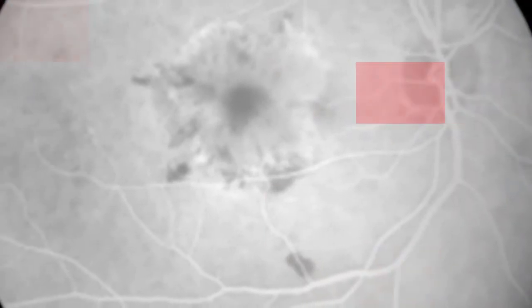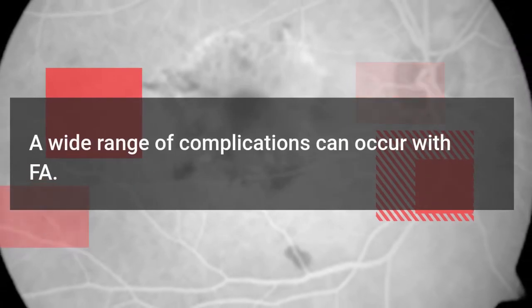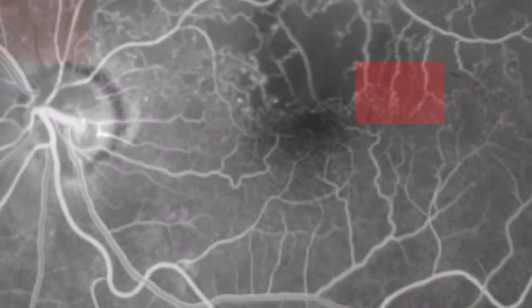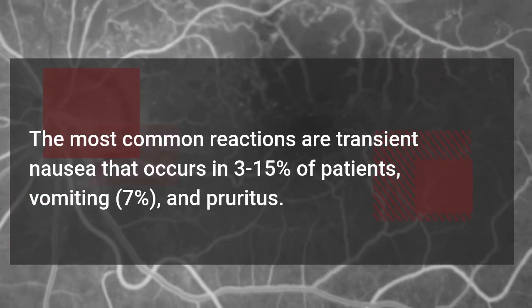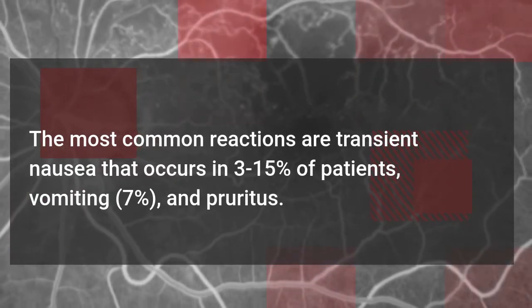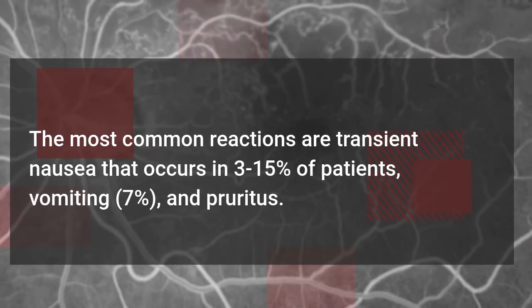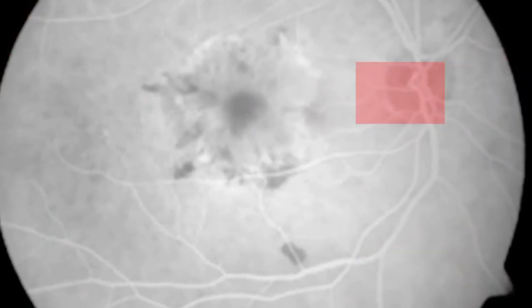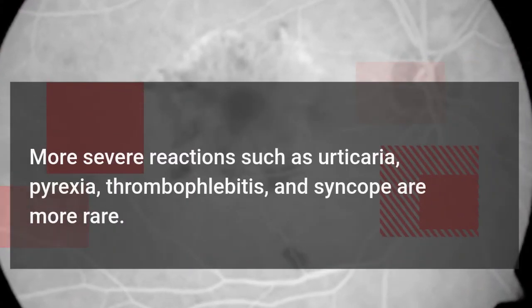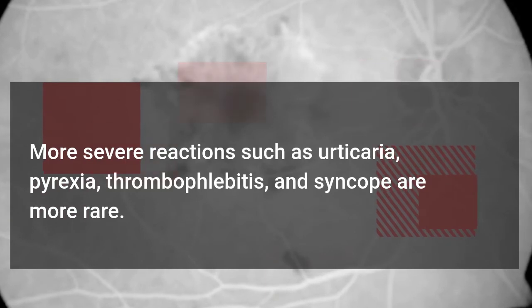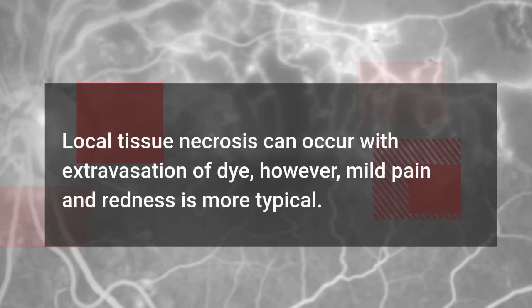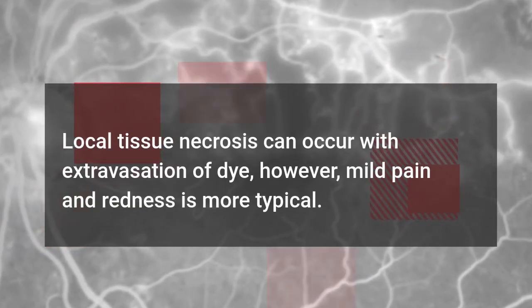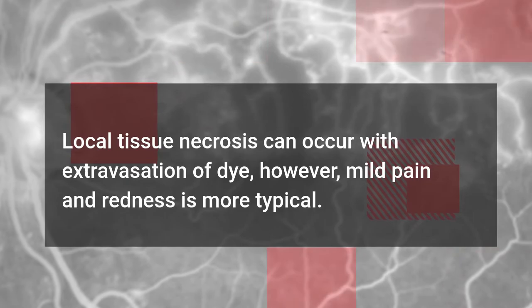Complications. A wide range of complications can occur with FA. The most common reactions are transient nausea that occurs in 3 to 15% of patients, vomiting at 7%, and pruritus. More severe reactions such as urticaria, pyrexia, thrombophlebitis, and syncope are more rare. Local tissue necrosis can occur with extravasation of dye; however, mild pain and redness is more typical.